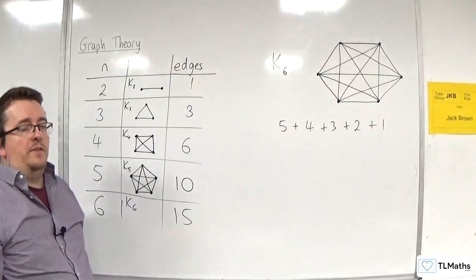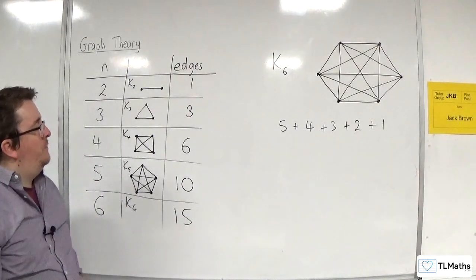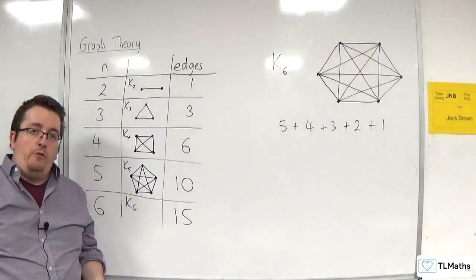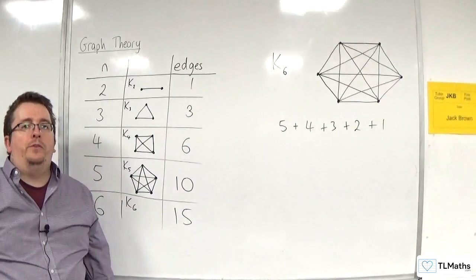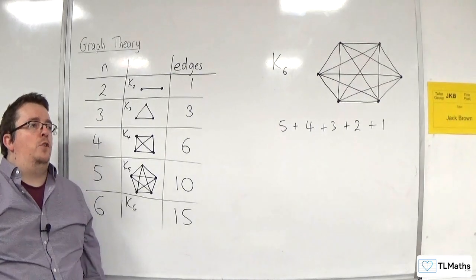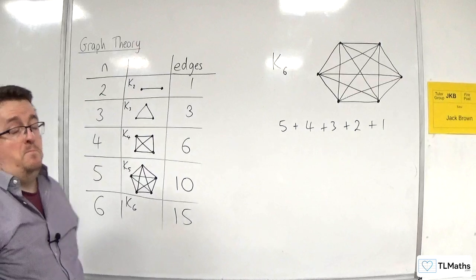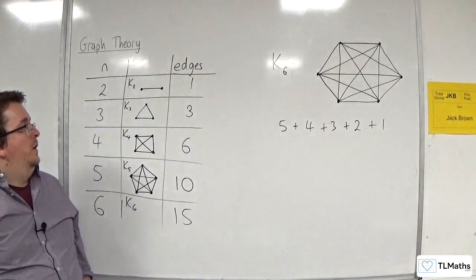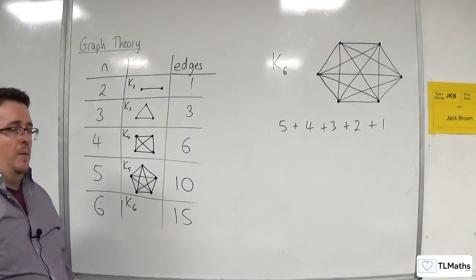And again, you should be spotting that these are the triangular numbers. So, once again, just as we had for the total number of comparisons required in the bubble sort and the shuttle sort, we also saw it in the quicksort algorithm as well. We've seen it in bin packing. So, we keep on coming back to this.